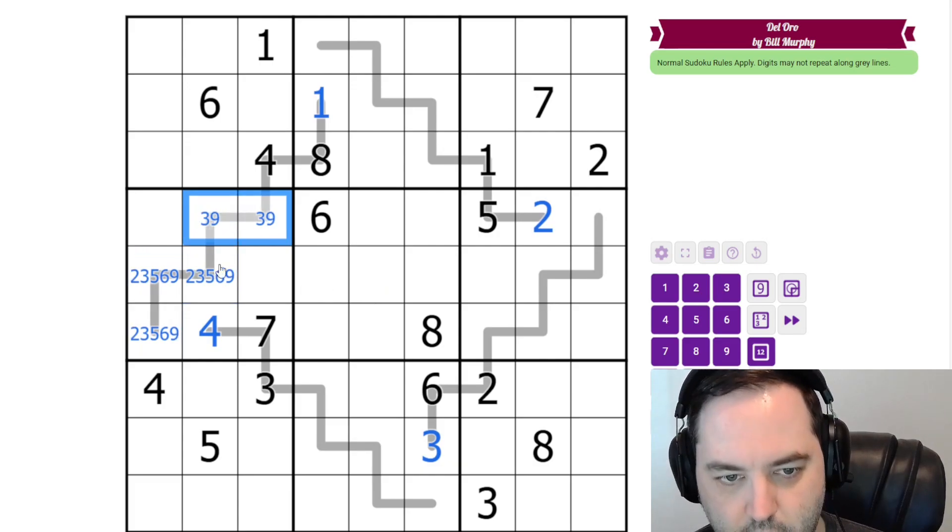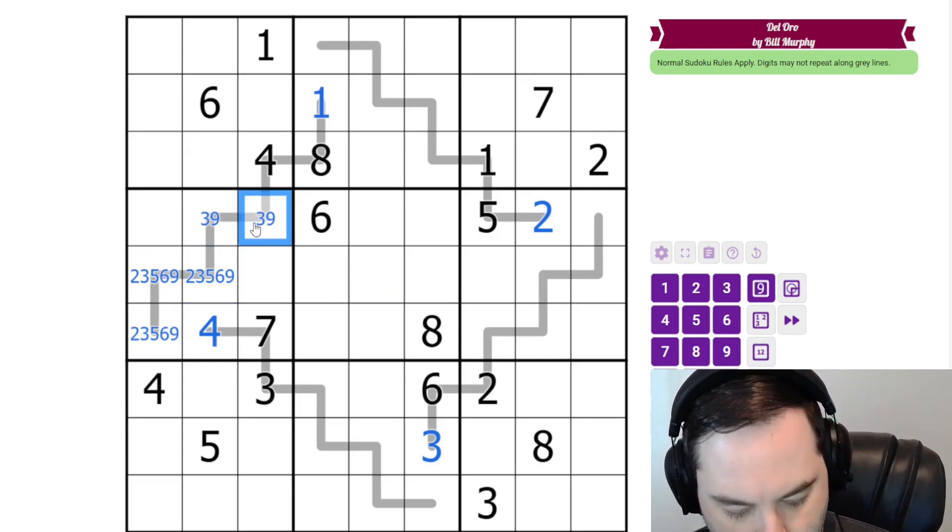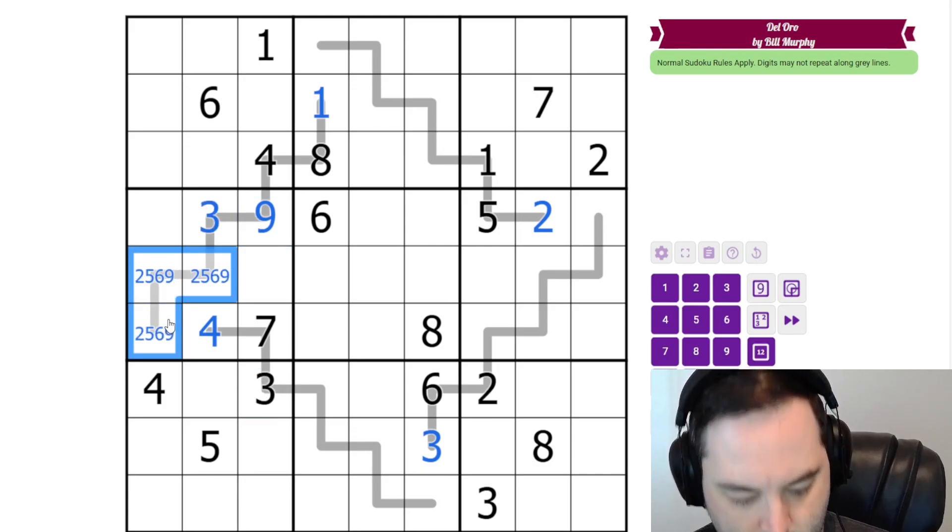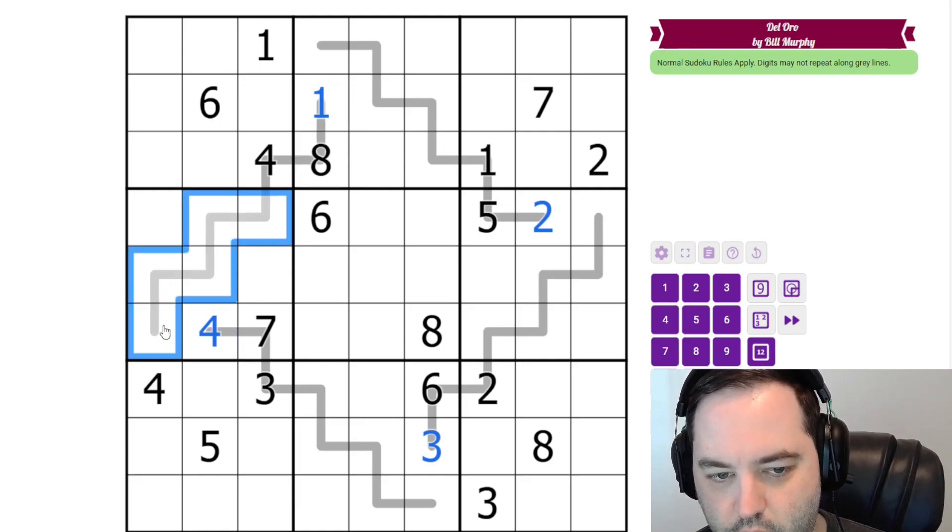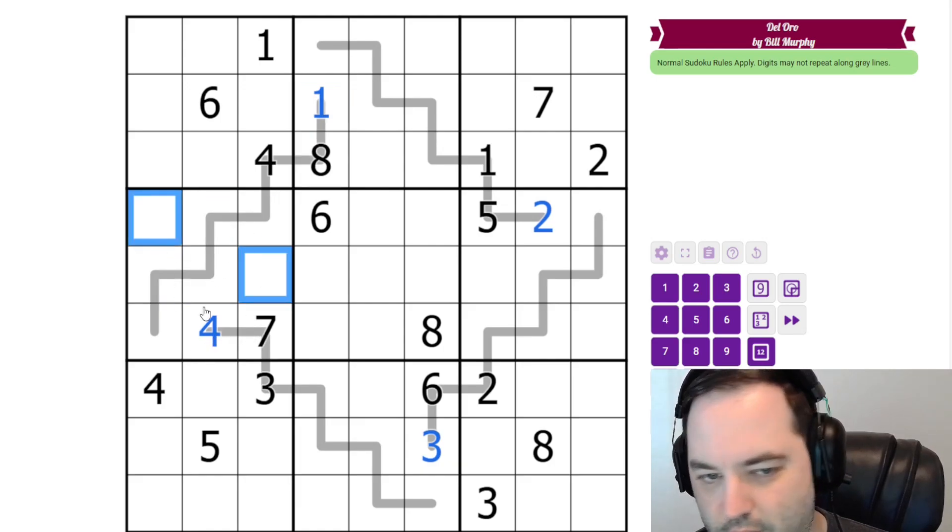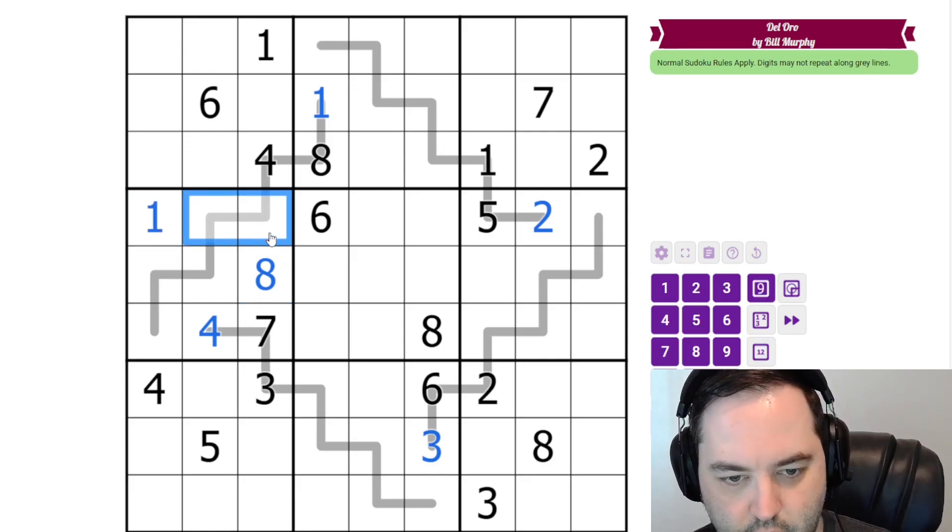Here we can clean up quite a bit. We have a 3, 9 pair, and it's resolved by this 3 here. So these are not 3 and 9. This is not 5 or 6 in the column, and we're left with a 5, 6 pair. The other way we could have looked at that is where do 1 and 8 go in this box? They don't go on this line and they're not here, so we have a 1, 8 pair here. This is 8, and this is 1. This was 9, 3, this was 2, and a 5, 6 pair.